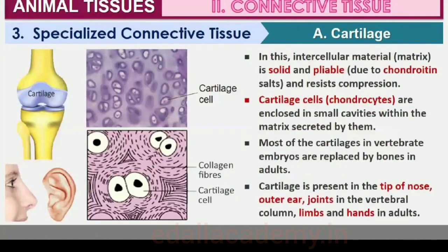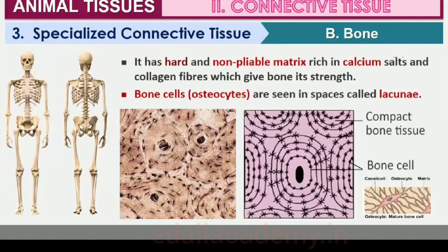Cartilage, bones and blood are various types of specialized connective tissues. The intercellular material of cartilage is solid and pliable and resists compression. Cells of this tissue, chondrocytes, are enclosed in small cavities within the matrix secreted by them. Most cartilages in vertebrate embryos are replaced by bones in adults. Cartilage is present in the tip of nose, outer ear joints, between adjacent bones of the vertebral column, limbs and hands in adults.